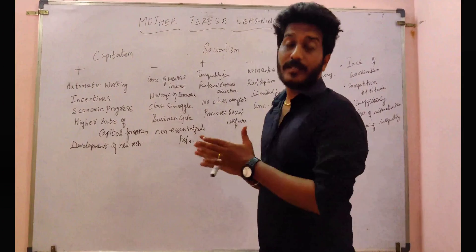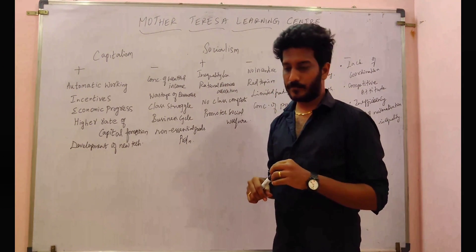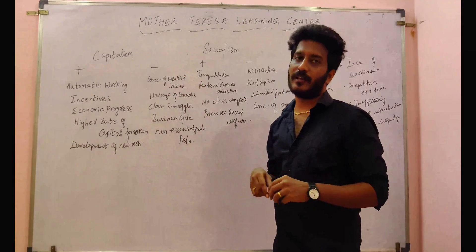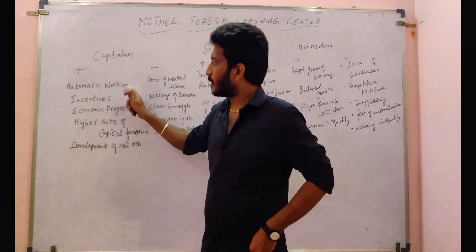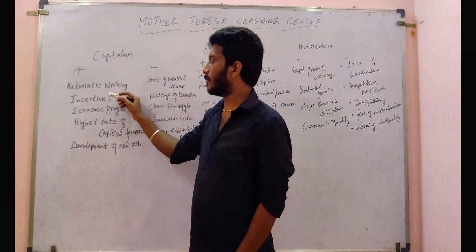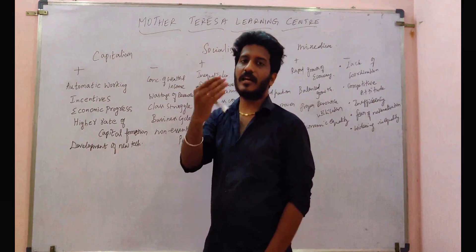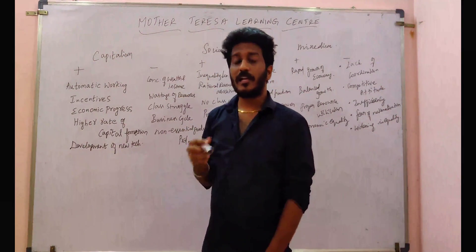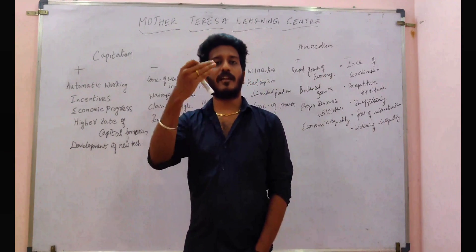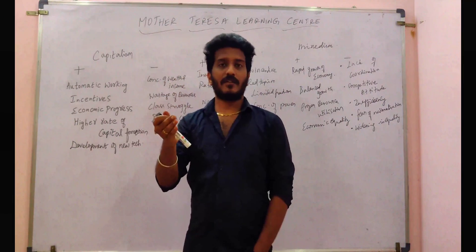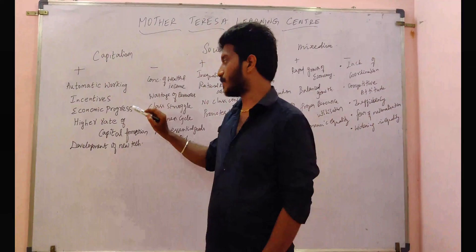Now we will discuss the pros and cons of the three types of economy. Capitalism is automatically working — you don't need to get anybody's permission. Economic progress is also one of the plus points.